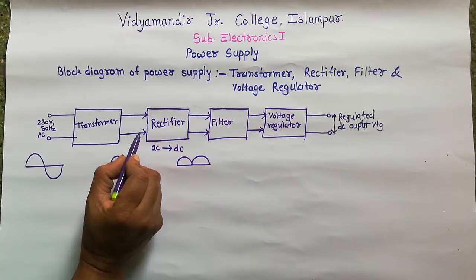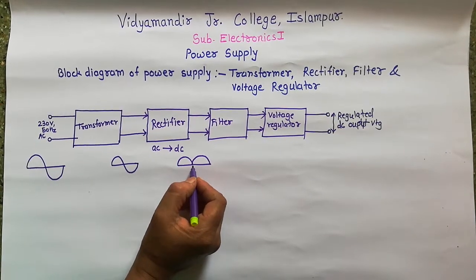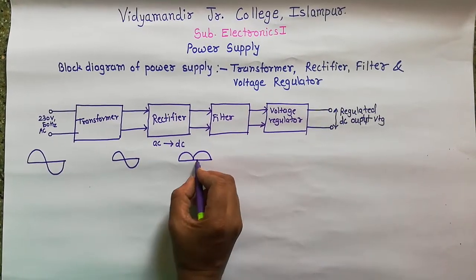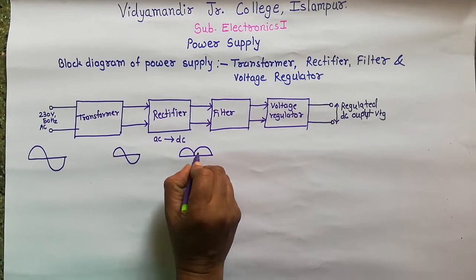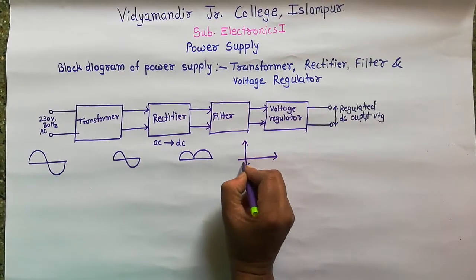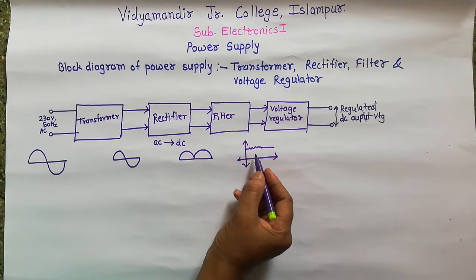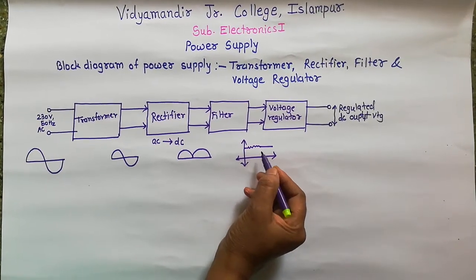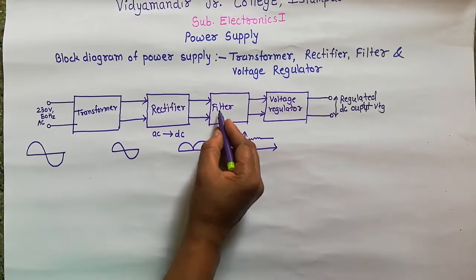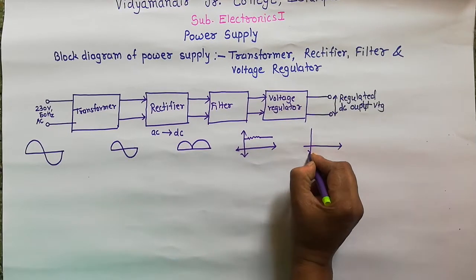The rectifier output is unidirectional but it is not steady — it has some fluctuations. To remove these fluctuations, the filter circuit is used. The filter circuit is used to remove the unwanted AC components from the rectifier output. The output waveform of the filter circuit still has some fluctuations and is not steady.